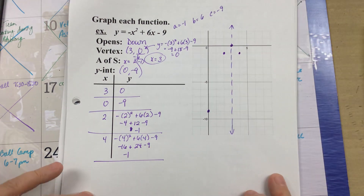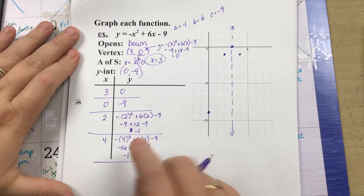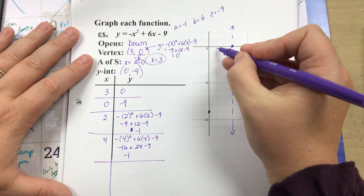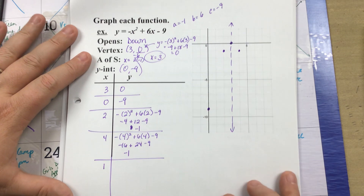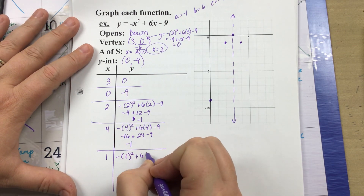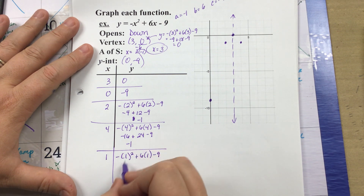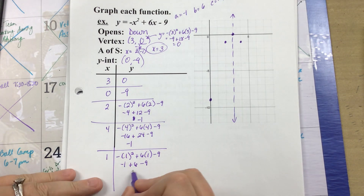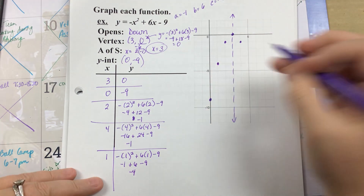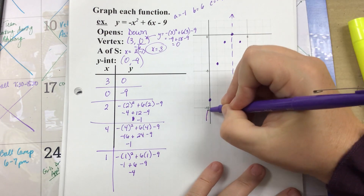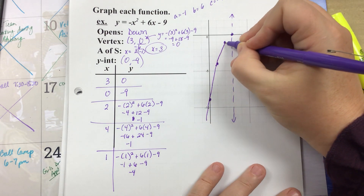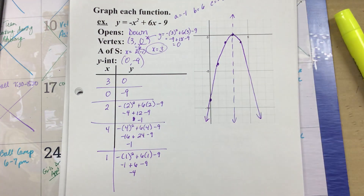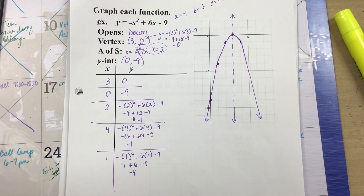Now I have 4 points, so for the fifth one let's plug in x equals 1: negative 1 squared plus 6 times 1 minus 9 gives negative 1 plus 6 minus 9, which equals negative 4. So the point is (1, -4). That gives me 5 points on the graph. You can always have more if you like. I sketch my parabola — notice it opened down, as expected. That's the basics for graphing parabolas. If you have questions, please let me know.